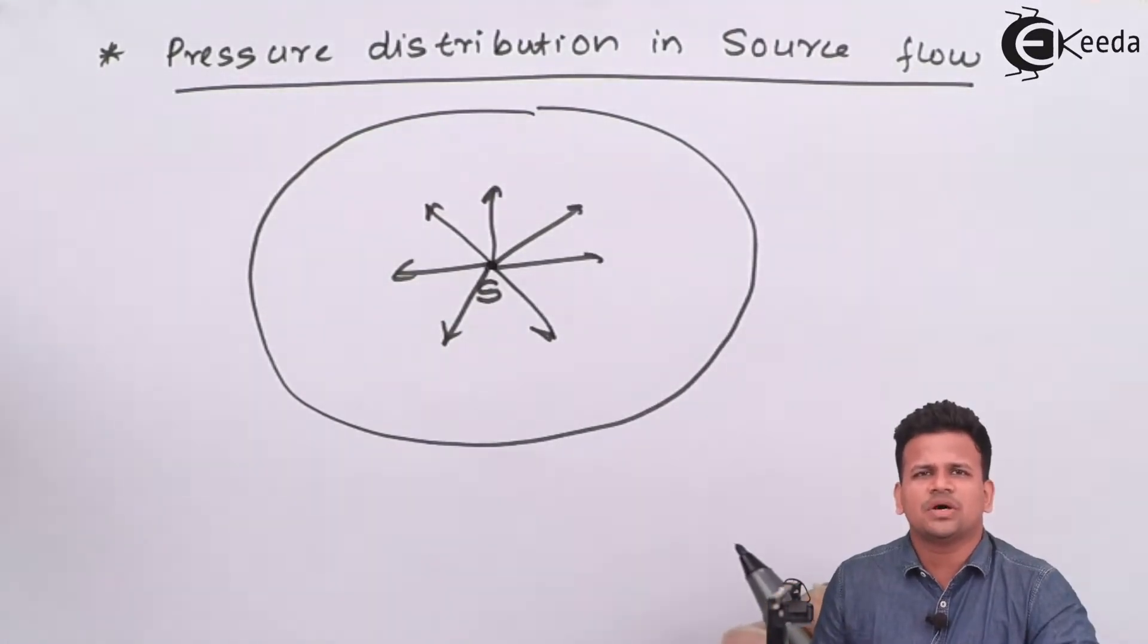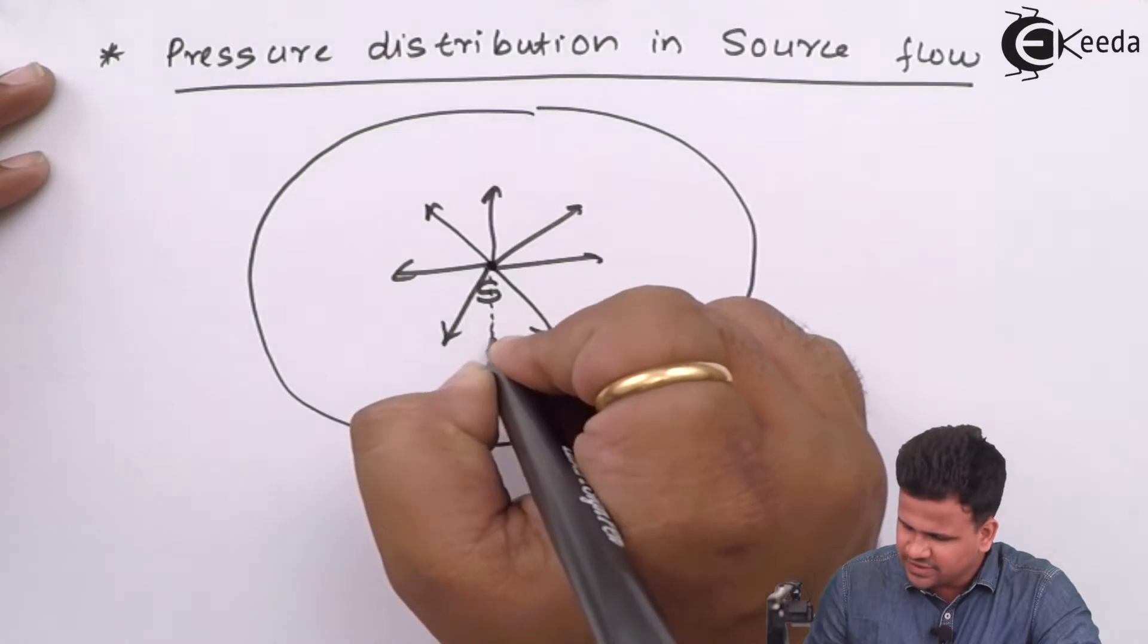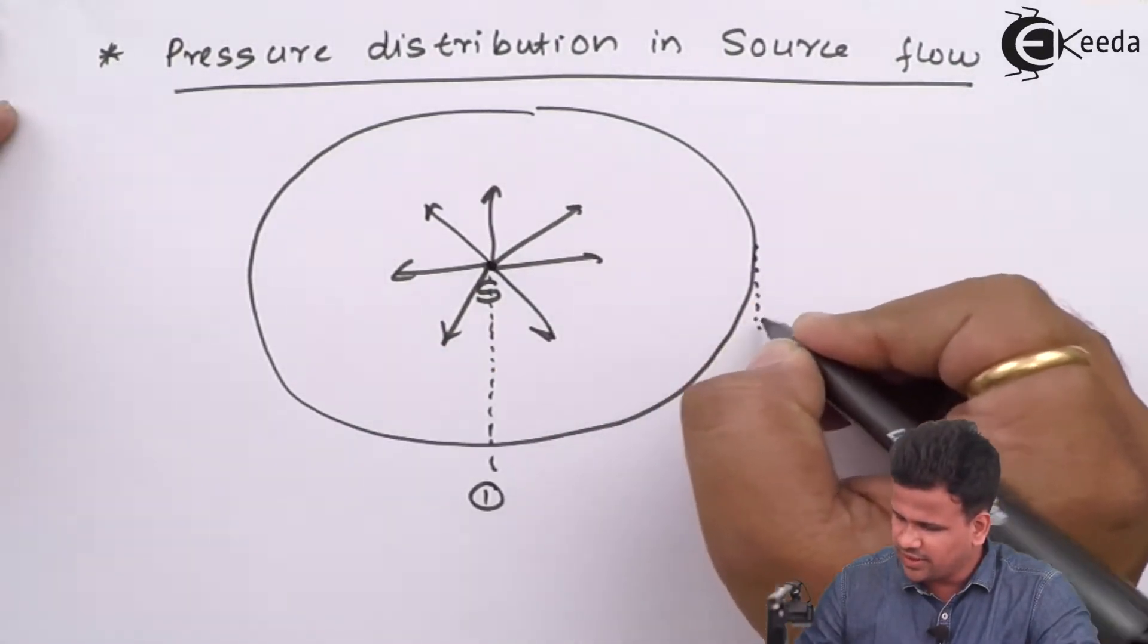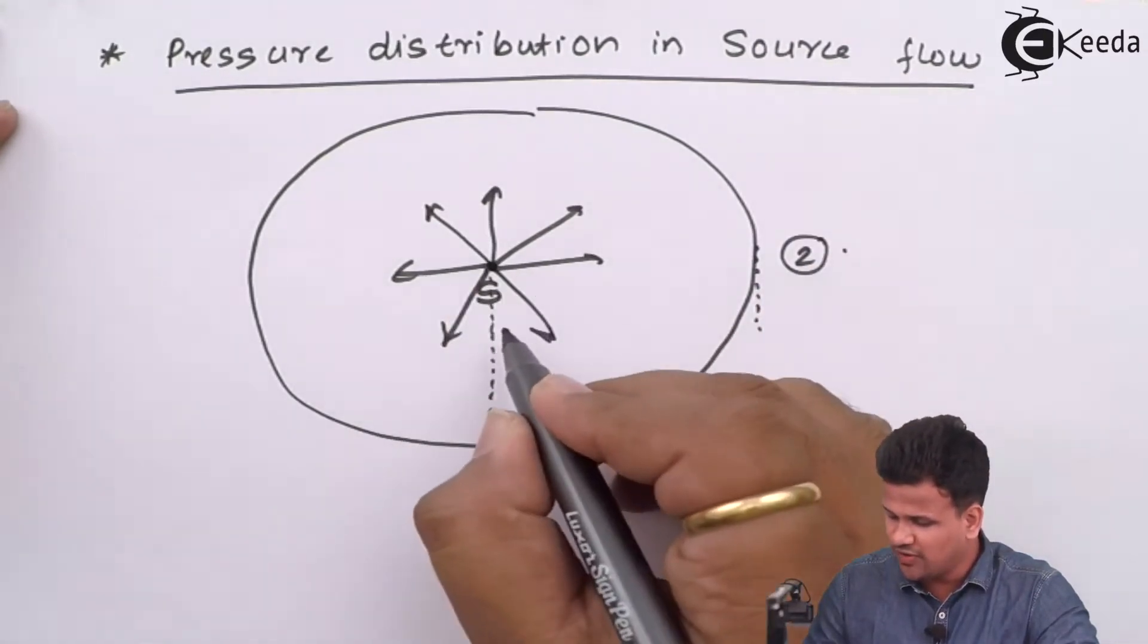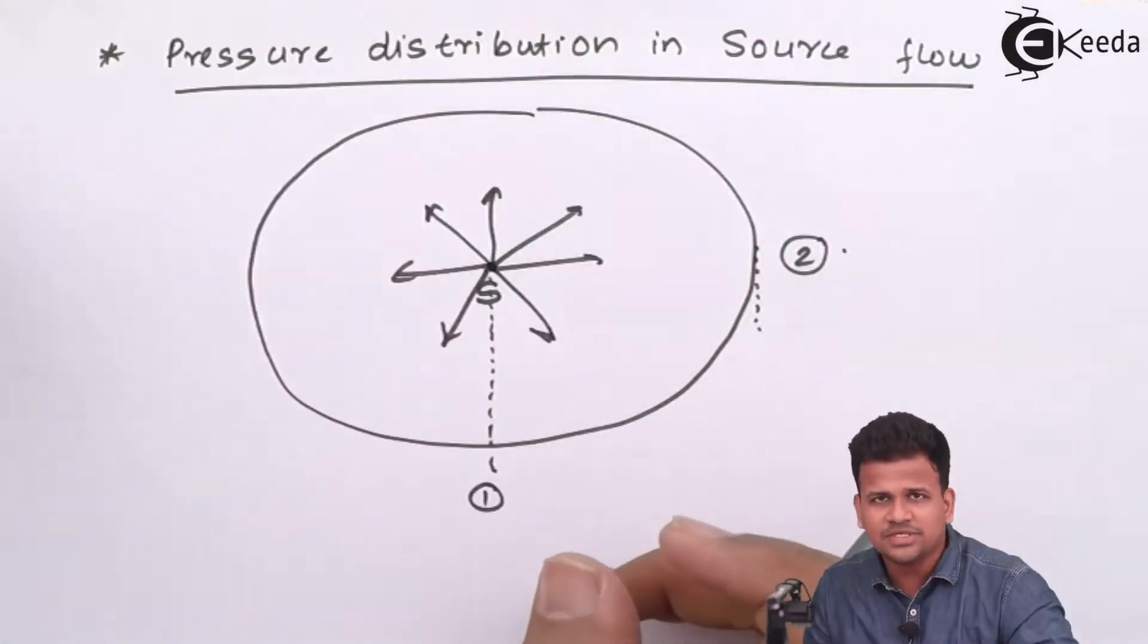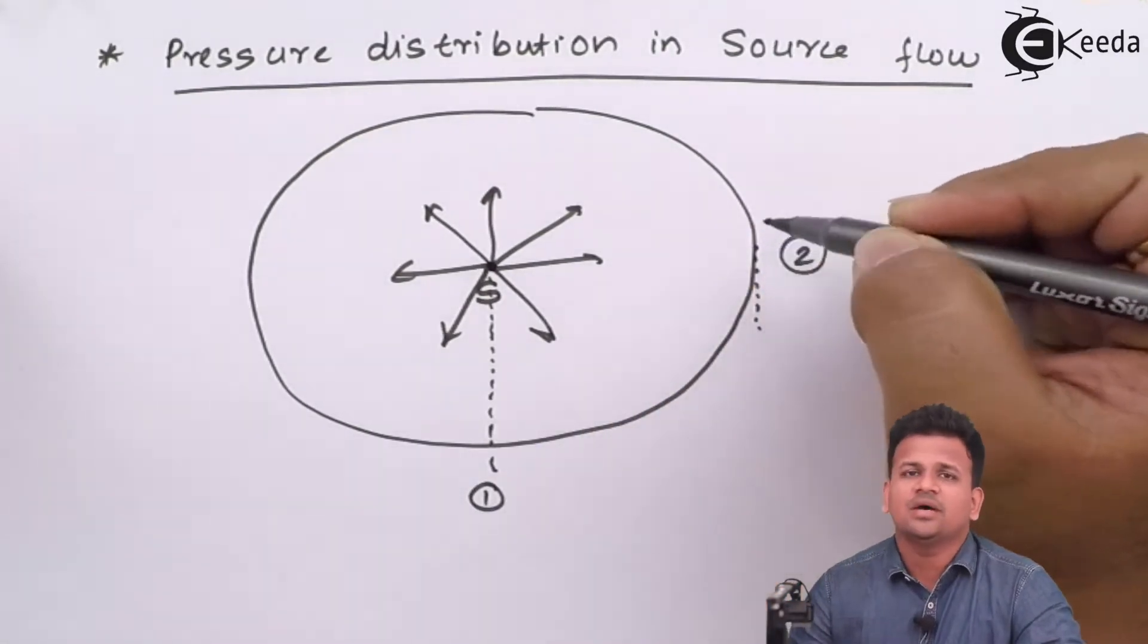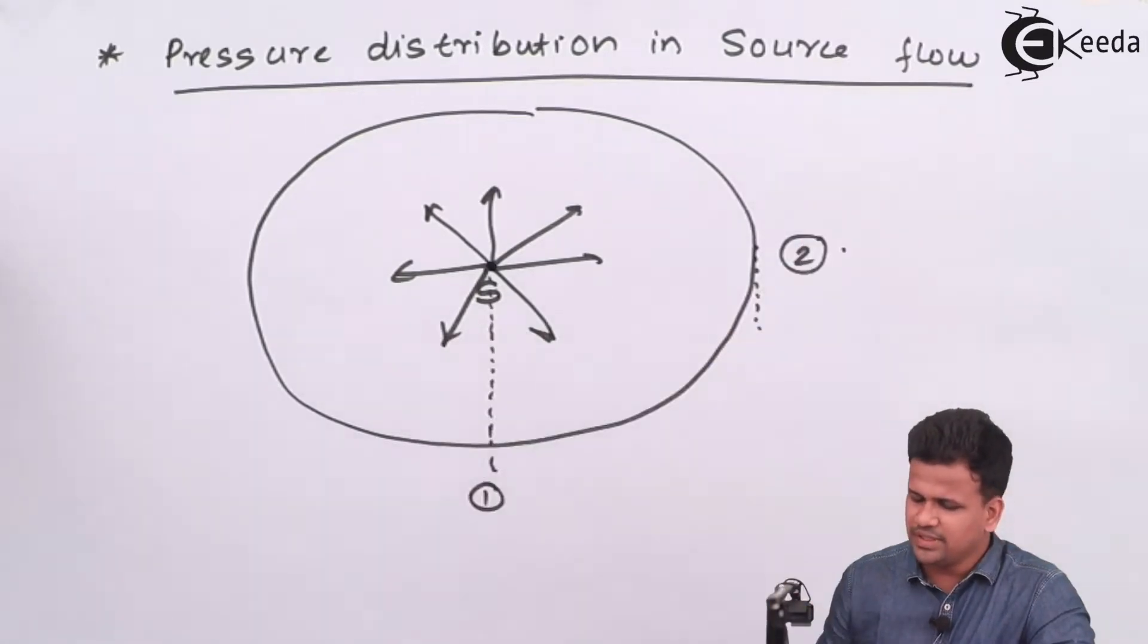Let us consider Bernoulli's principle applied at these two points. Let us consider the pressure at this point—point one—and this point over here as point two. During this course from one to two, the fluid flows radially outwards. When it flows radially outwards, it will come to a point where the fluid velocity will be zero. So we can apply Bernoulli's principle.